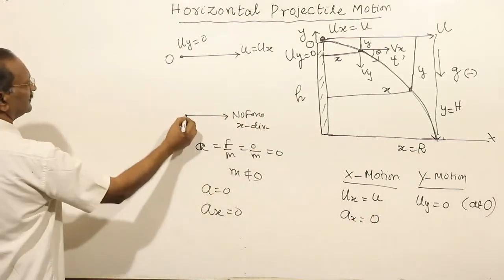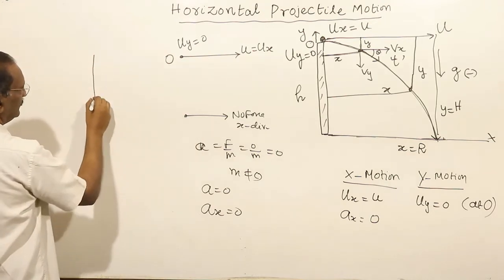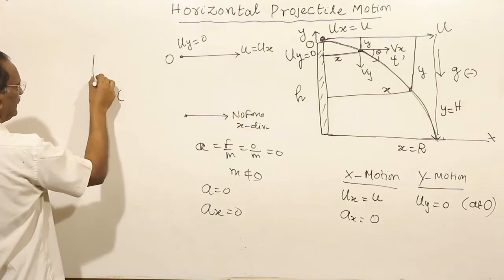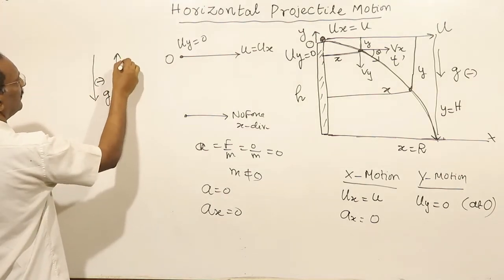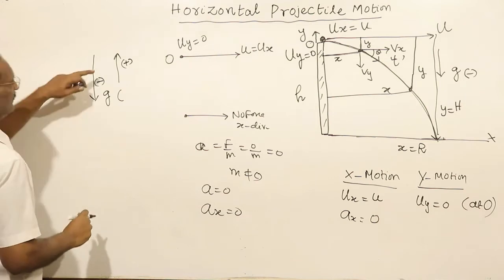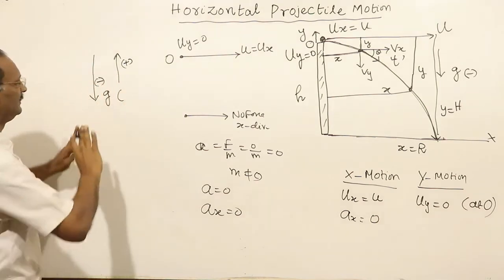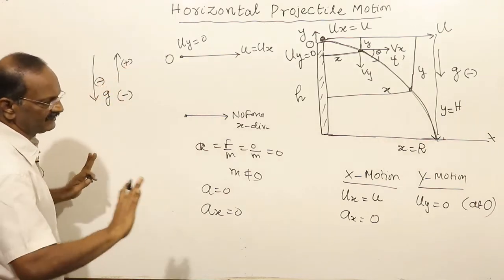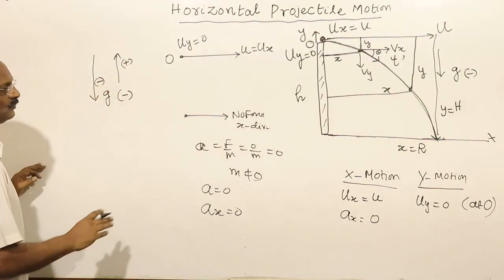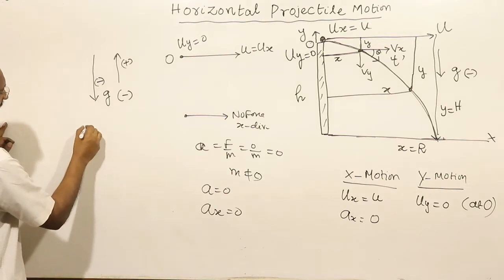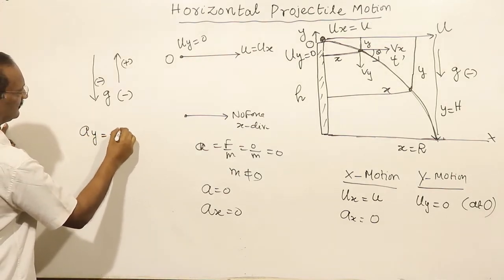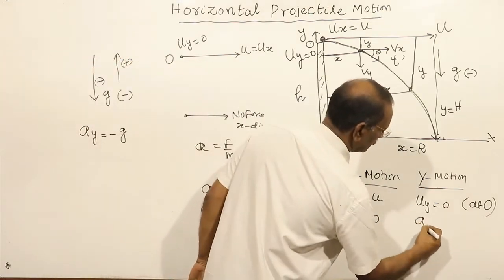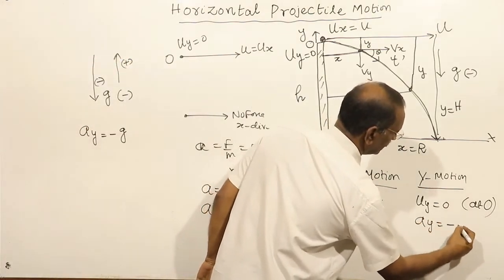Acceleration in the y-direction is due to gravity. Downward direction is taken as negative and upward as positive. Therefore, acceleration in the y-direction is equal to minus g.